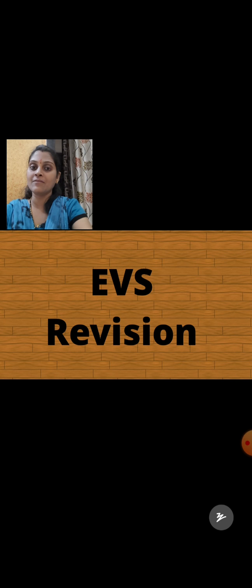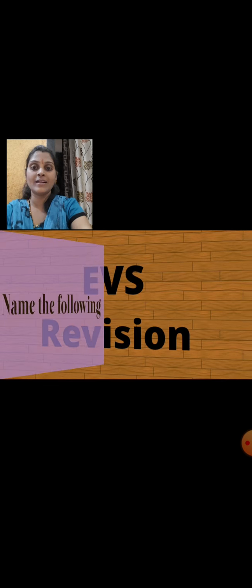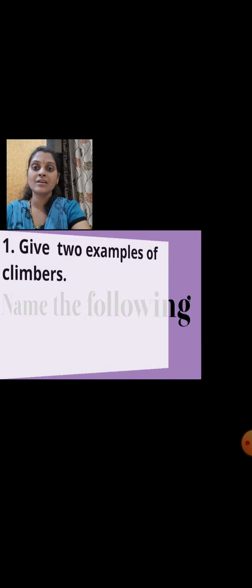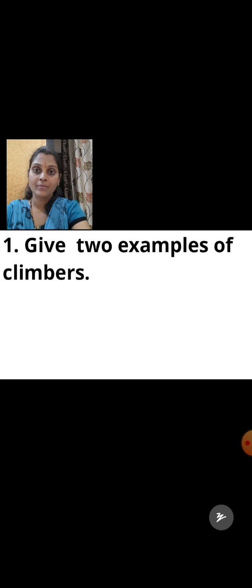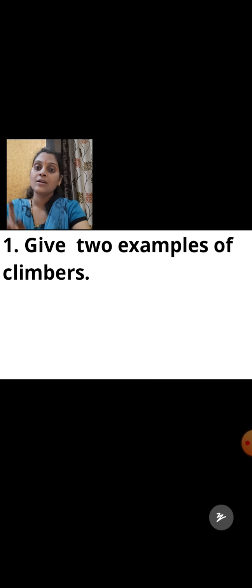Let's begin with the first part, that is name the following. First question: give two examples of climbers. You have to write any two examples of climbers. You can write bluebell and grapevine as your two examples.